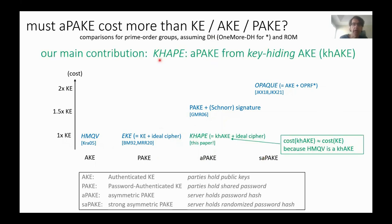Our main contribution is a protocol we call CAPE. It stands for key-hiding authenticated key exchange, and it's an asymmetric PAKE created using a key-hiding authenticated key exchange. Because the overhead of this construction over the underlying key-hiding AKE is very low, and HMQV turns out to be a key-hiding AKE, CAPE has essentially the same efficiency as HMQV. In particular, CAPE costs essentially the same as the symmetric PAKE.